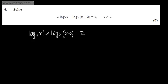I'm going to combine the logs on the left-hand side. If we've got a difference, we can write this now as a quotient. So if we're subtracting, we divide, and that's going to give me log to the base 3 of x squared divided by x minus 2. That is going to be equal to 2.